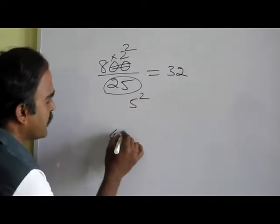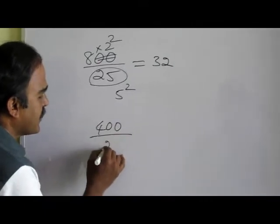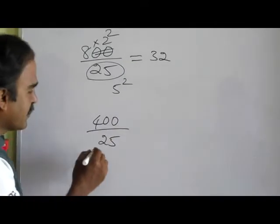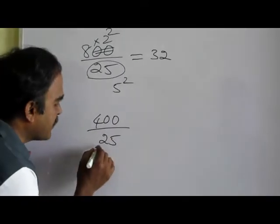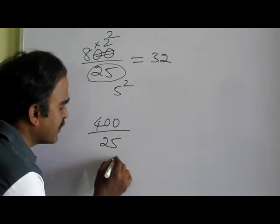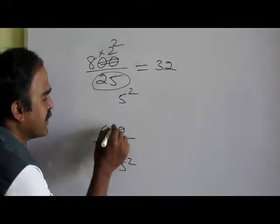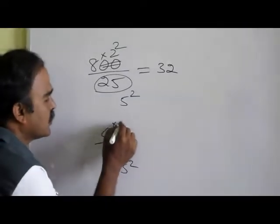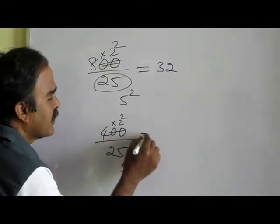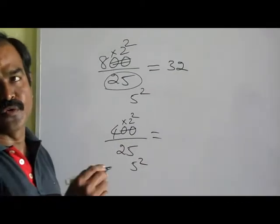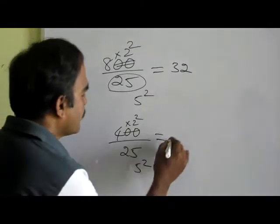400 divided by 25. Instead of dividing by 25, which is 5 squared, we can multiply by 2 squared. What is 4 times 2 squared? That is 4 times 4, which is 16.